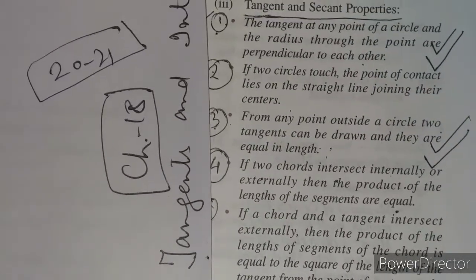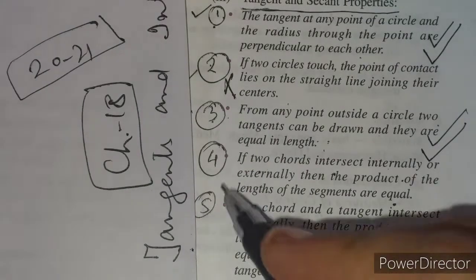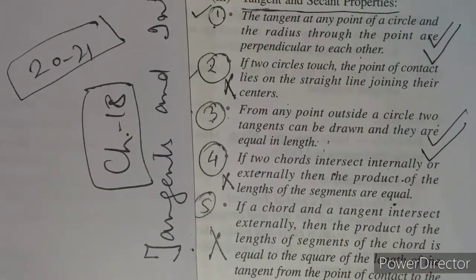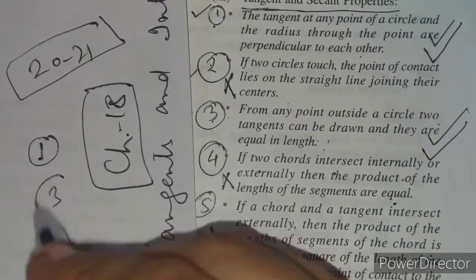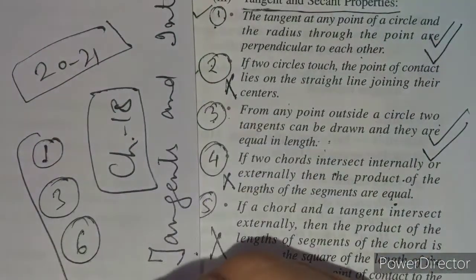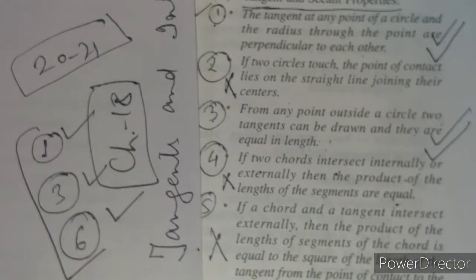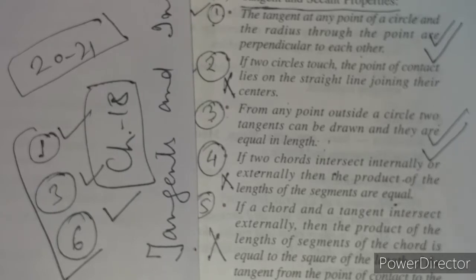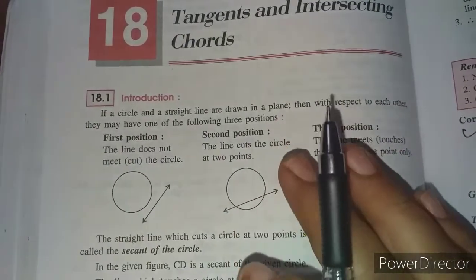The properties that have been cancelled totally are property number two, property number four, and property number five. So to summarize: property number one is there, property number three is there, and property number six is there. Properties two, four, and five have not been included in the syllabus.